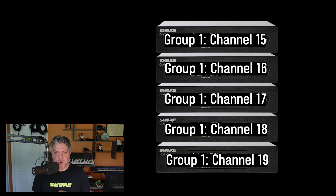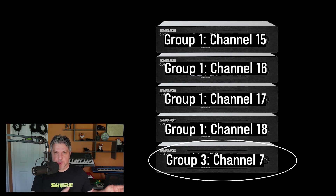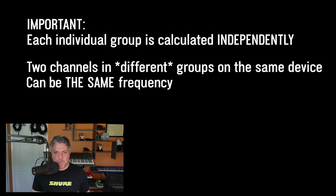If four of my QLXD units are in group one, and that last fifth one is set to group three for example, there's really no guarantee that that fifth unit is on a compatible frequency with the other four. That's because each individual group is independently calculated. There's a chance that channel three in group one and channel four in group three could actually be the same exact frequency, which runs the risk of you running two transmitters on the same frequency — which is bad news.